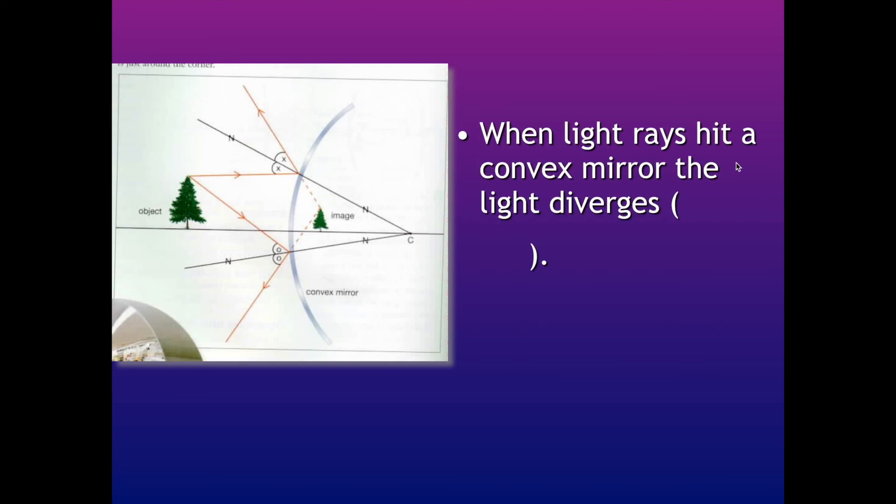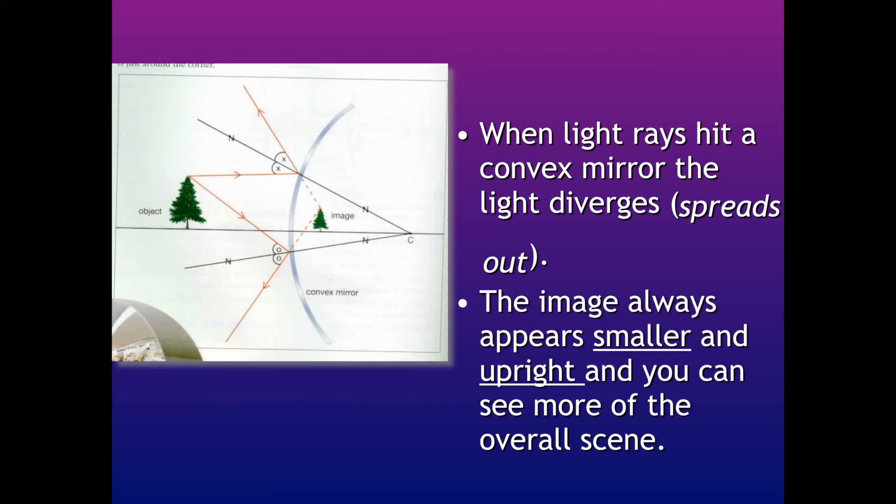So when the light rays hit a convex mirror, the light rays diverge. That means they spread out. See this? They hit the mirror and then they spread out. They're not coming together. The image always appears smaller and upright and you can see more of the overall scene. So they're useful in the application of being like security mirrors or side mirrors in cars.